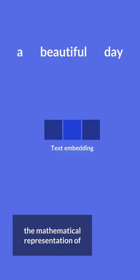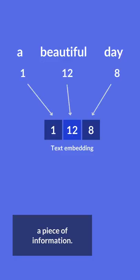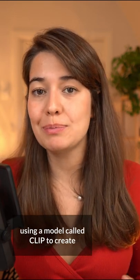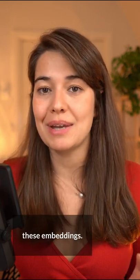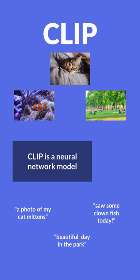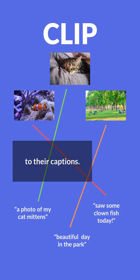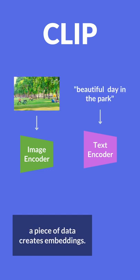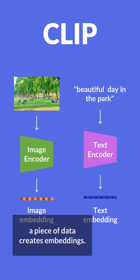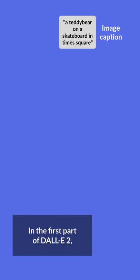Side note: an embedding is the mathematical representation of a piece of information. The creators of DALL-E 2 opted for using a model called CLIP to create these embeddings. CLIP is a neural network model that learns to match images to their captions. It trains encoders which, given a piece of data, create embeddings.